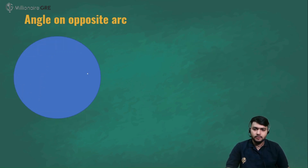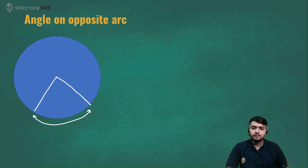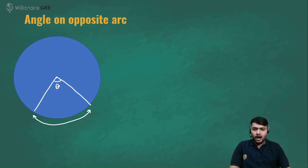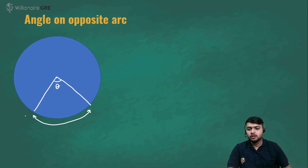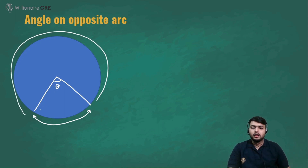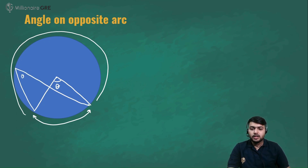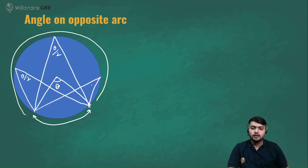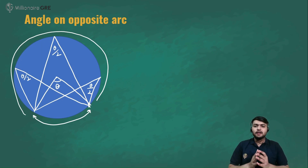The next concept is the angle on the opposite arc. If an arc makes angle θ at the center, then anywhere on the opposite arc, the angle made is θ/2. So this angle is θ/2, and this angle is also θ/2. To reiterate: if an arc makes angle θ at the center, then anywhere on the opposite arc, the angle made is θ/2.